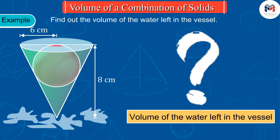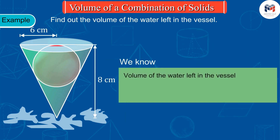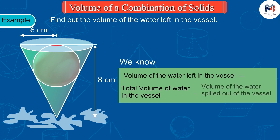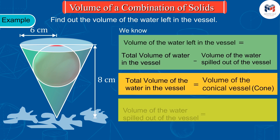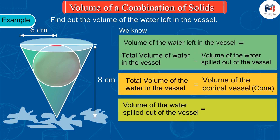Find out the volume of the water left in the vessel. We know that the volume of the water left in the vessel is equal to the difference of the total volume of water in the vessel and the volume of the water spilled out. The total volume of water in the vessel will be equal to the volume of the conical vessel, and the volume of the water spilled out will be equal to the volume of the ball, that is the sphere.